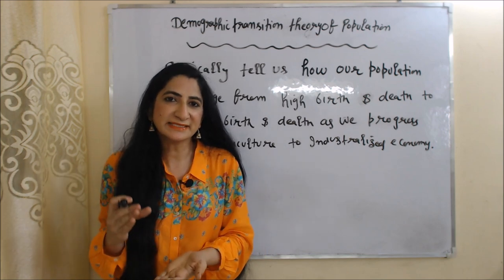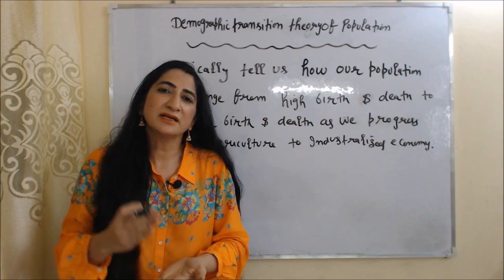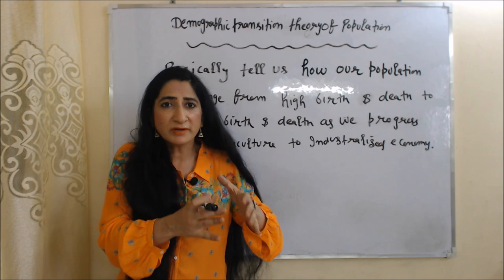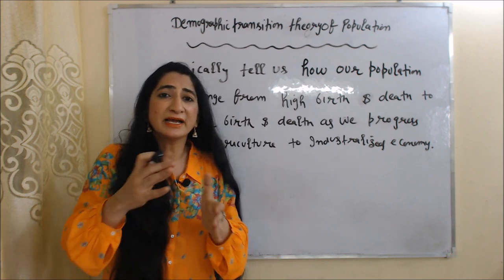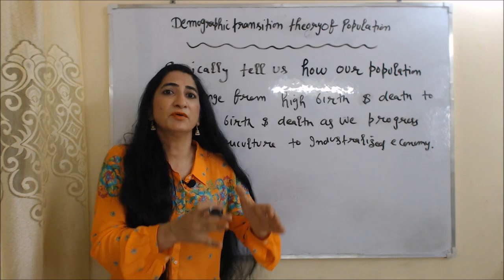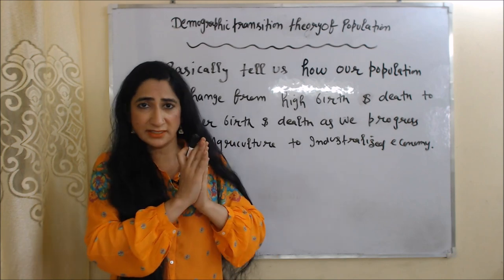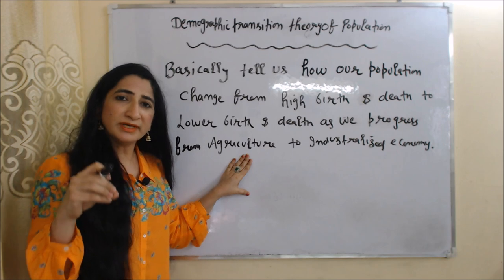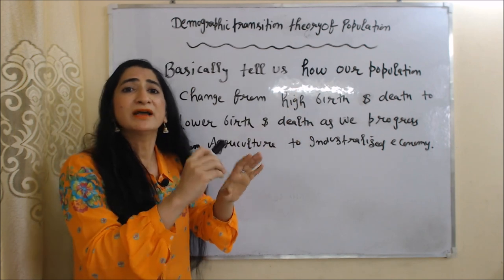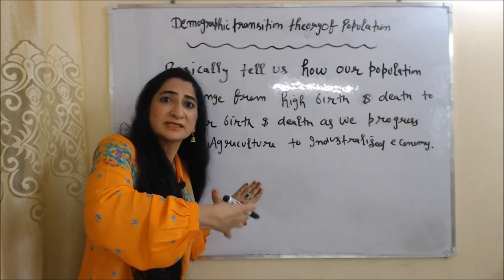Now we are going to talk about the next theory: the demographic transition theory of population. This theory basically tells us how population changes from high birth and high death rates to lower birth and lower death rates as we progress from an agricultural to an industrialized economy. When economic development is very low and we are mainly dependent on agriculture, both birth rate and death rate are very high. But as we grow and become more industrialized, both rates start declining.